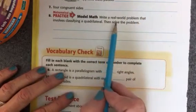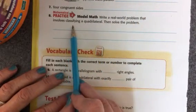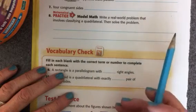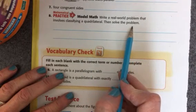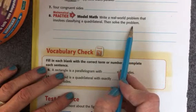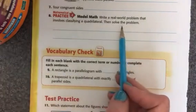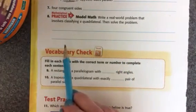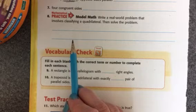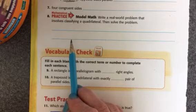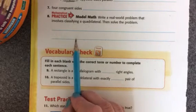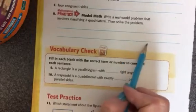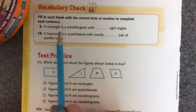Then you're going to write a real-world problem that involves classifying a quadrilateral, and then solve the problem. Okay, so you might think of the shape of a building, and then describe what like the front of the building looks like, or the roof of the building, and then you write down what the quadrilateral is. Okay, let's move on.